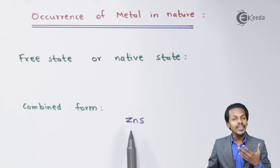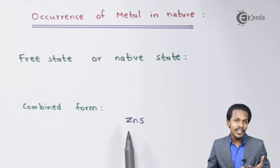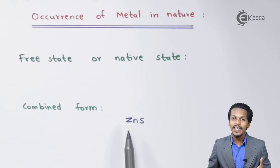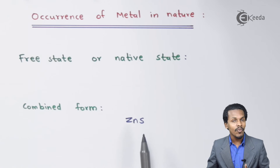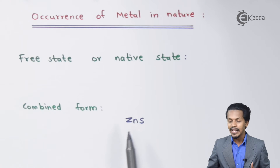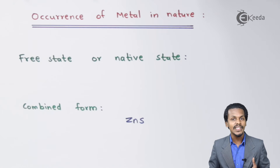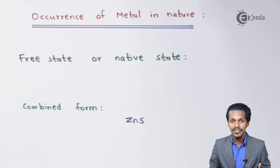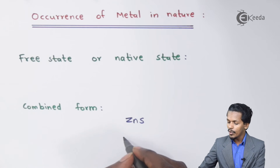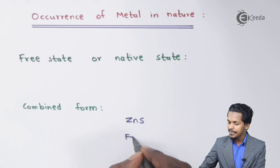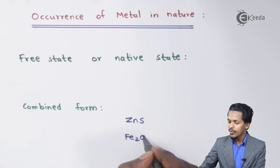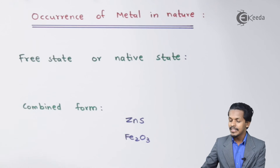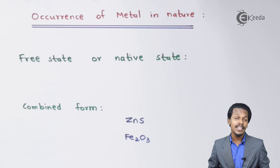Zinc in ZnS is in a combined form as a sulfide. Similarly, Fe2O3, which is ferric oxide, is another example of a combined state where iron is associated with oxygen atoms.